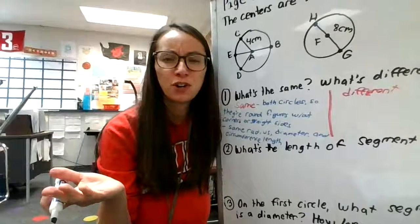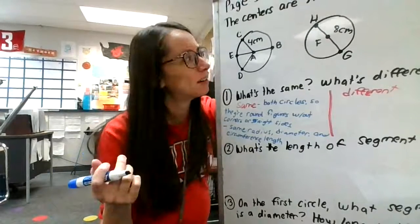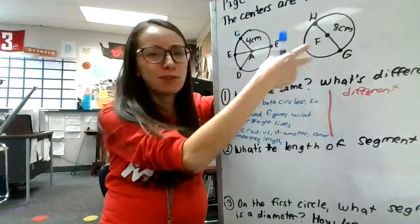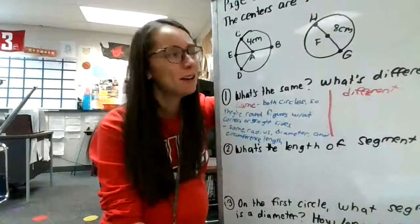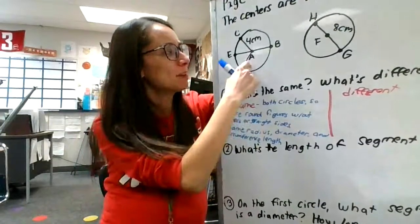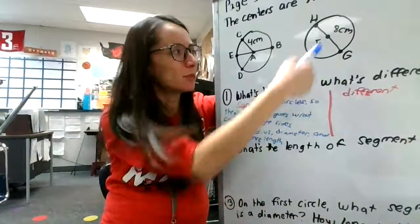So what are their differences? What's the difference here? You might have said something about, well, they have different letters representing those points. Something that really stood out to me was, well, this one has more segments drawn on it than this one.